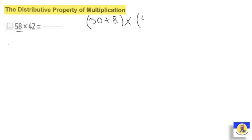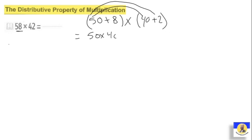Multiplied by forty plus two. So we have separated the numbers into their place values. Someone might ask: instead of fifty plus eight, can I write forty plus ten plus eight? Yes — as long as the sum of the number gives you the correct value. And the second number: forty plus two gives forty-two. So we distribute: fifty by forty, plus fifty by two — we distributed the fifty over both forty and two. Then we go to the eight: eight by forty, plus eight by two.